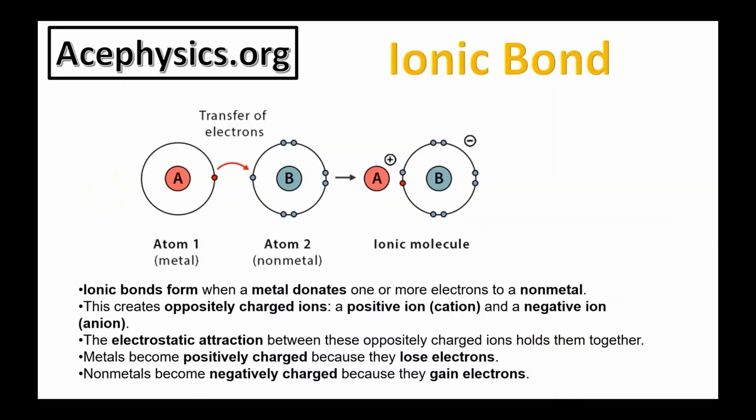Now let's discuss ionic bonds. Ionic bonds form when a metal donates one or more electrons to a non-metal. This creates oppositely charged ions. The electrostatic attraction between these oppositely charged ions holds them together. In an ionic bond, an electron leaves one orbital and jumps to another orbital. And then because of a charge difference, the two atoms are attracted together. That's how an ionic bond works.